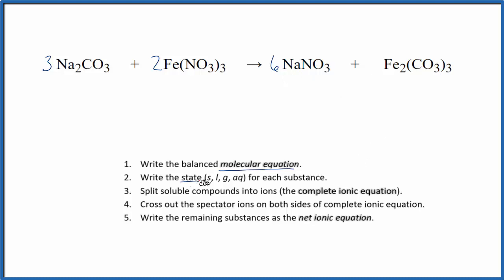Next we write the state for each substance. So these two, they're going to be aqueous, dissolved in water so they can react. Nitrates, those are usually soluble, so we're going to put an aqueous too. That should be dissolved in water. For the iron three carbonate, they're very slightly soluble, so we'll write S after this. Essentially this is a solid, so it's going to be insoluble in water.